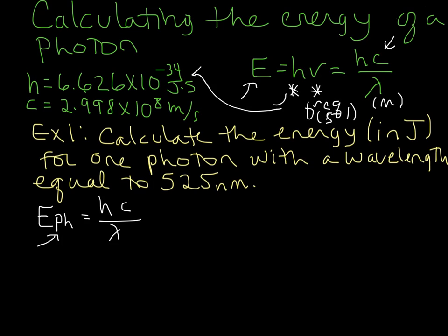Now we have to plug in meters for lambda. So let's go ahead and convert our nanometers to meters. So 525 nanometers, and we have 10 to the 9 nanometers, 1 meter. So we're going to end up with 5.25 times 10 to the negative 7 meters. So let's go ahead and plug that in.